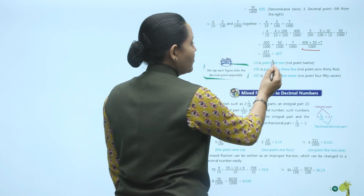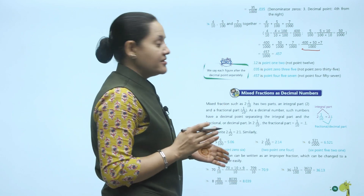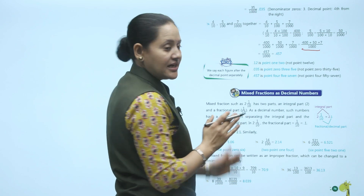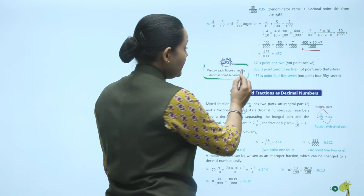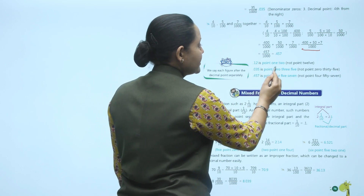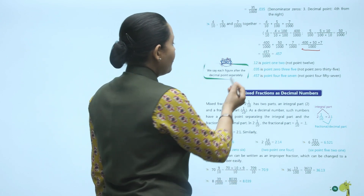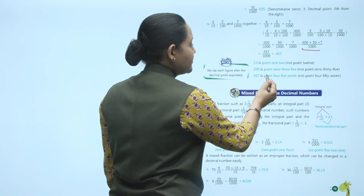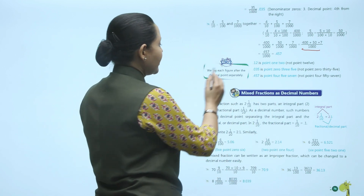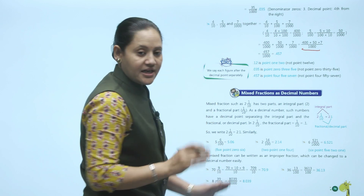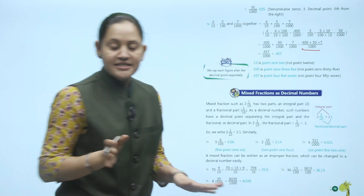Important note on reading decimals: 0.12 is read as 'point one two,' NOT 'point twelve.' 0.035 is read as 'point zero three five,' NOT 'point zero thirty-five.' 0.457 is read as 'point four five seven,' NOT 'point four fifty-seven.' We say each digit after the decimal point separately.